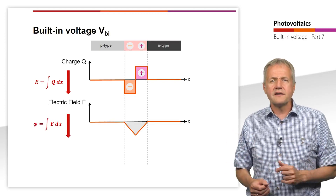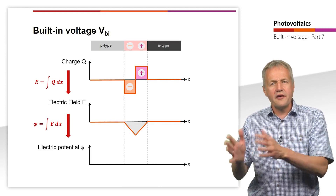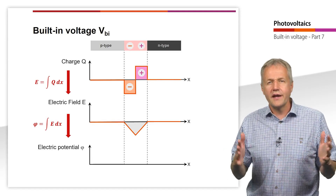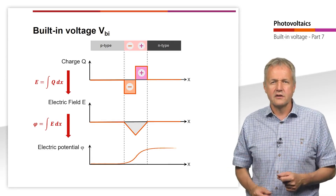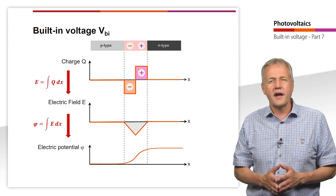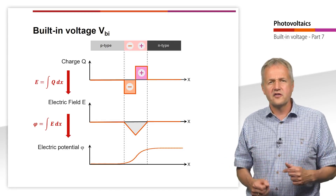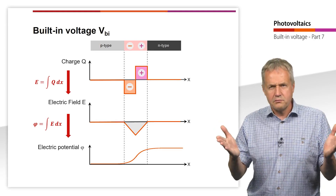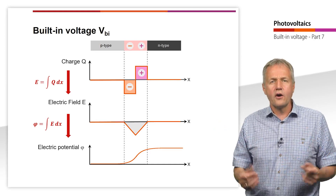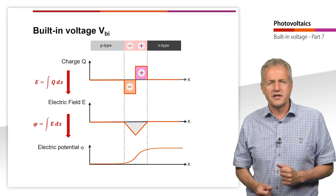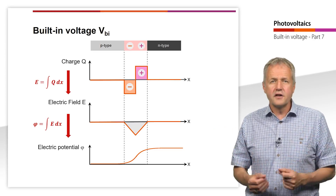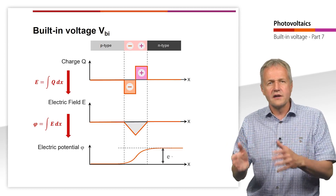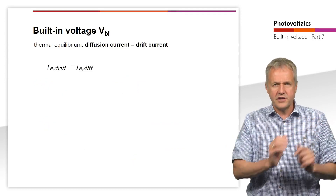If we now integrate the electric field from the left to the right edge of the depletion region, we get the electric potential. The electric potential depends on the density of the space charges in the space charge zone — in other words, on the dopant concentration. The built-in voltage corresponds to the potential difference between the left and right edge of the depletion region.